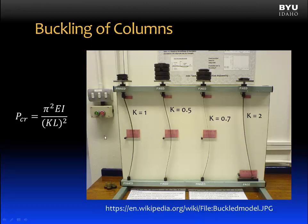Here's another demonstration that shows the impact of end condition on critical load. Here are four members, each with a different end-restraint condition. We can see that when the k value decreases, the load that the member can take increases. That can be seen in this equation — k is on the bottom of the equation. When k decreases, the critical load increases. When k increases, such as the fixed-free condition, the critical buckling load decreases. And we're done.